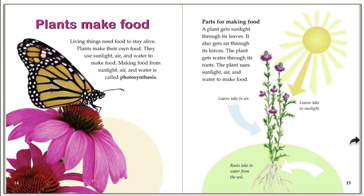Plants make food. Living things need food to stay alive. Plants make their own food. They use sunlight, air, and water to make food. Making food from sunlight, air, and water is called photosynthesis. A plant gets sunlight through its leaves. It also gets air through its leaves. The plant gets water through its roots, and the plant uses the sunlight, air, and water to make food.